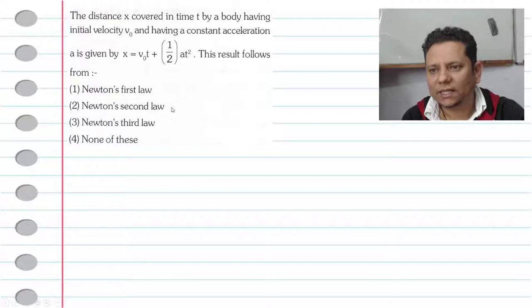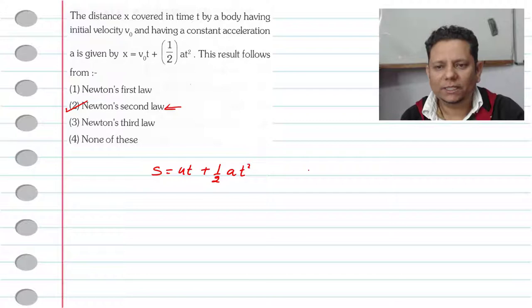Now if we notice, the right answer will be Newton's second law of motion, because this equation we have derived. So this equation, s = ut + (1/2)at², is actually the second equation of motion.